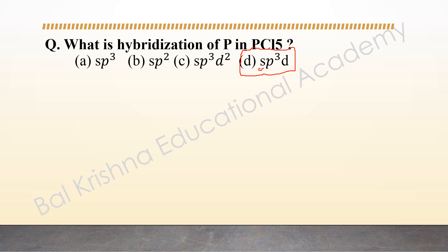In sp³d hybridization, one s orbital, one d orbital, and three p orbitals take part, forming five bonds. You can also find the hybridization using the formula: hybridization = ½ × (valence electrons in central atom + number of atoms attached by single bond + negative charge − positive charge).